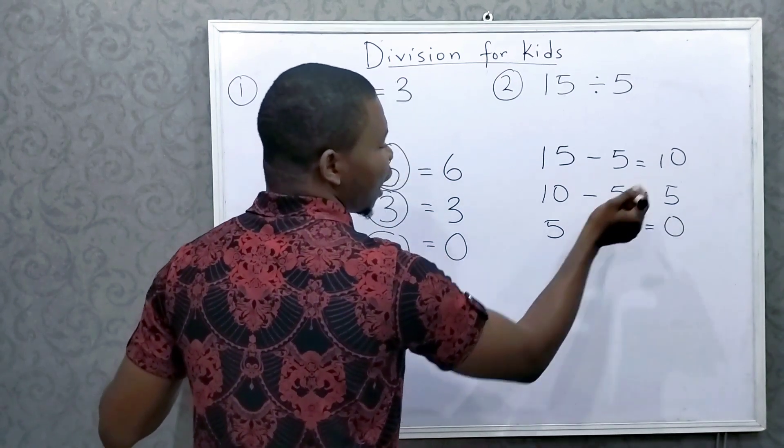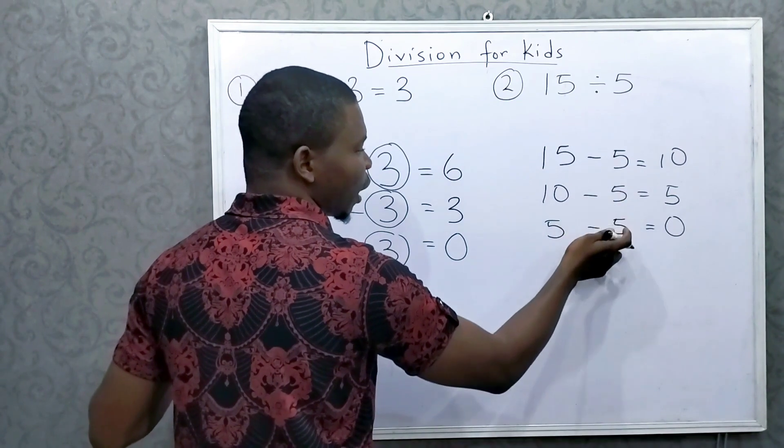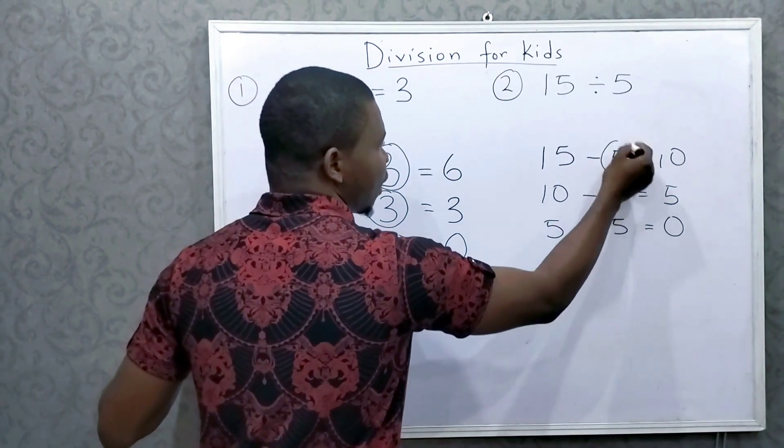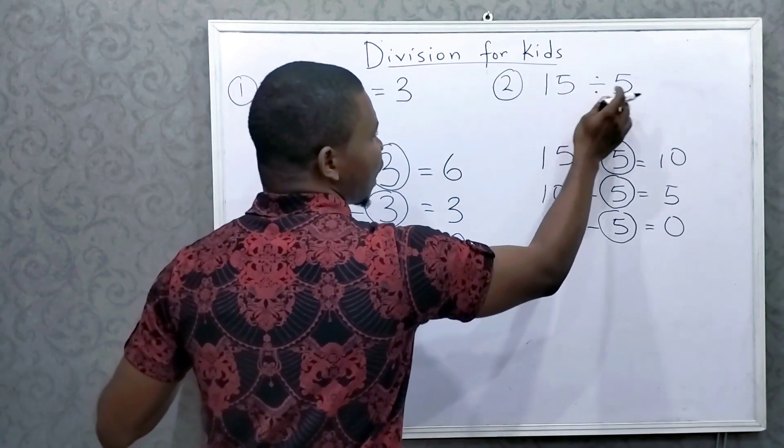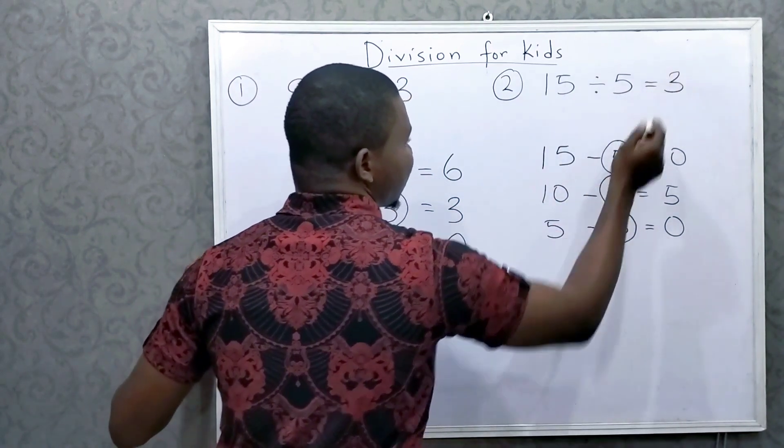So when I get to 0, I stop. And I'll count how many times did I subtract 5. That is 1, 2, 3. So 15 divided by 5 is equal to 3.